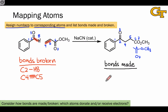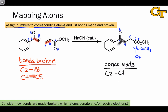Now let's move to the bonds made. It's evident that a new bond is made between carbon two and carbon four that doesn't exist in the starting materials. This bond replaces or substitutes for the carbon-2 hydrogen bond in the starting materials, indicating a kind of substitution process occurring in the vicinity of this carbonyl carbon.